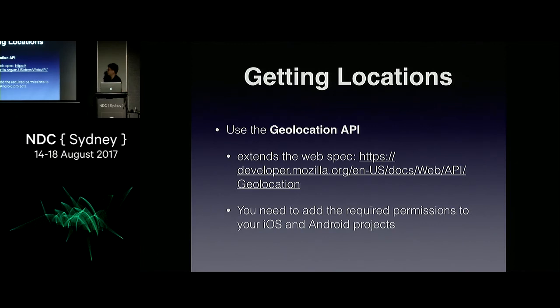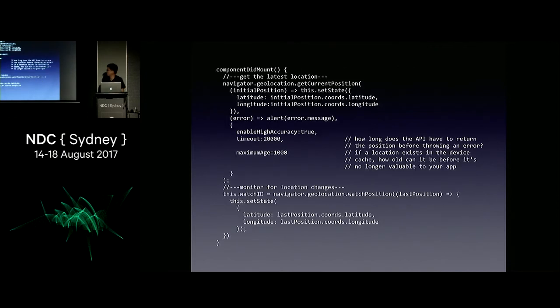If you want to get location data, you can use the Geolocation API. You just need to add the required permissions to your Xcode or Android project, and it will allow you to get your latitude and longitude.